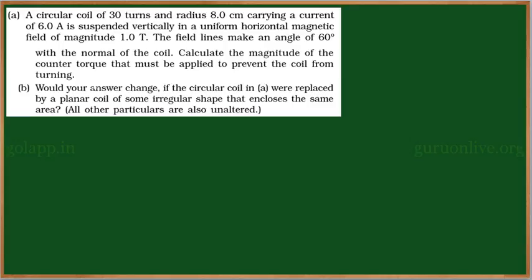See this problem: A circular coil of 30 turns and radius 8 centimeters carrying a current of 6 amperes is suspended vertically in a uniform horizontal magnetic field of magnitude 1.0 tesla. The field lines make an angle of 60 degrees with the normal of the coil. Calculate the magnitude of the counter torque that must be applied to prevent the coil from turning.